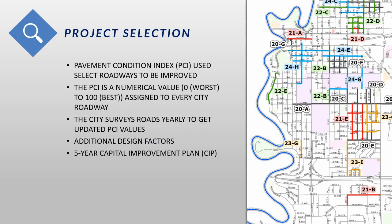You may be wondering how and why your street was chosen for improvements. There are several factors taken into consideration. One significant factor is what we call a pavement condition index, or PCI for short. This allows us to create a value, or a score, as a representation of the condition of a certain road. The PCI is a numerical value with 0 being the worst and 100 being the best. 0 would mean there is no pavement left, and 100 essentially means brand new construction.